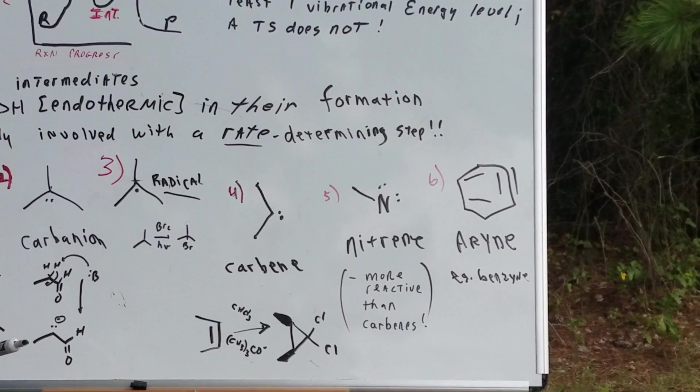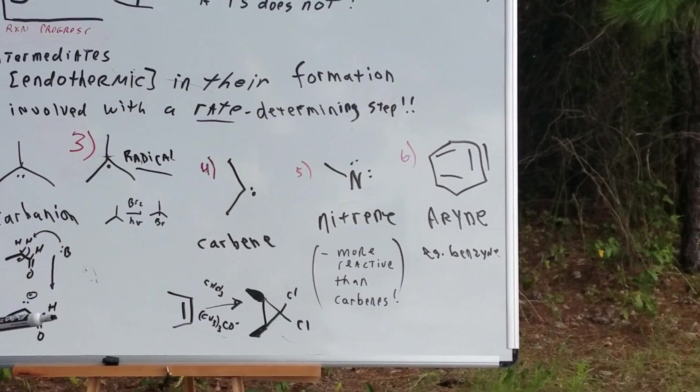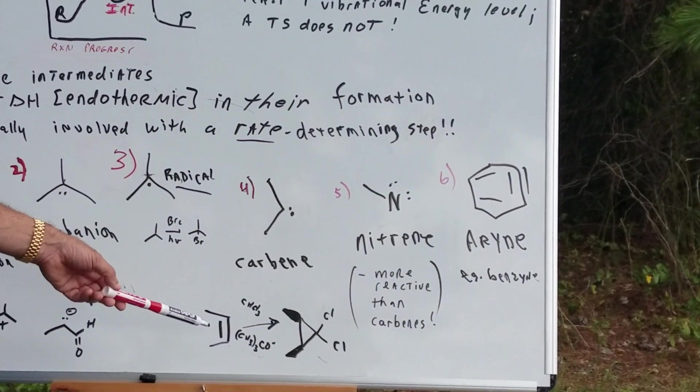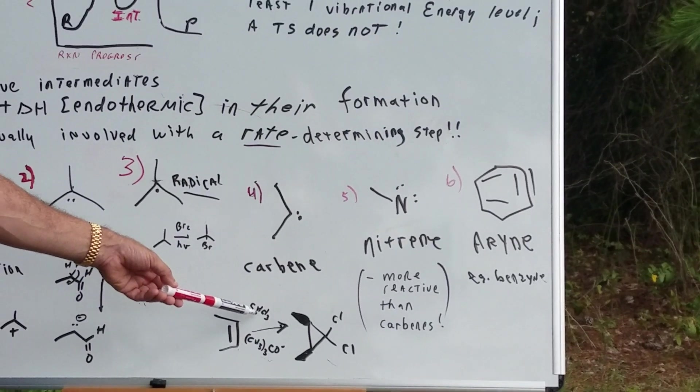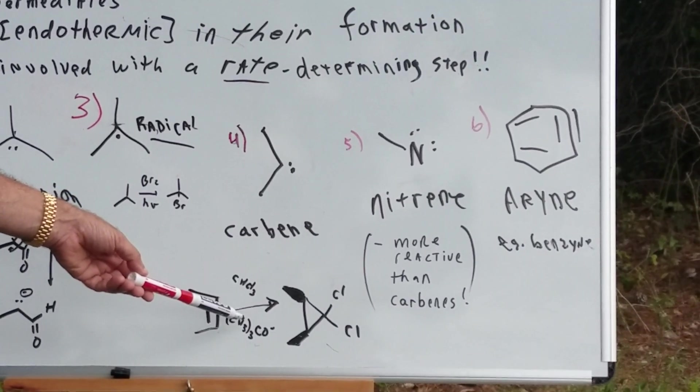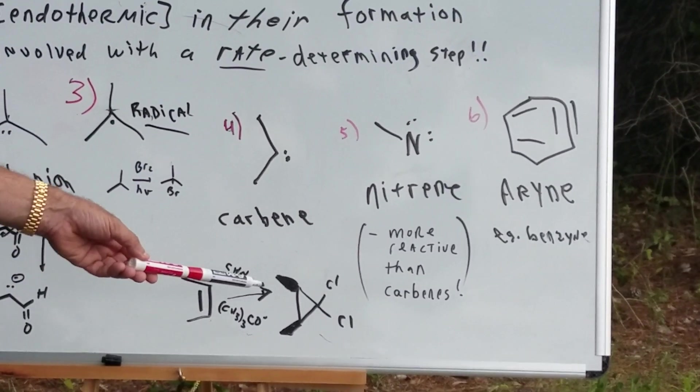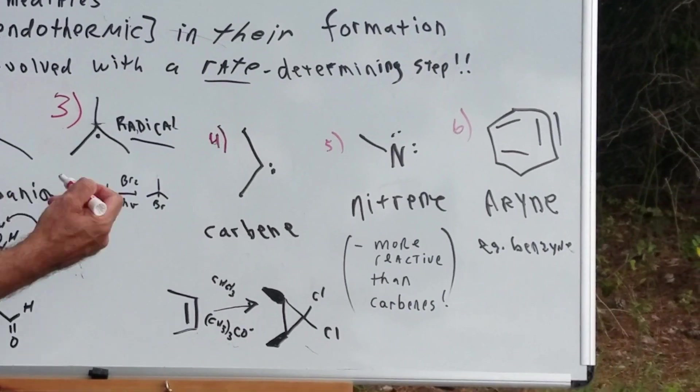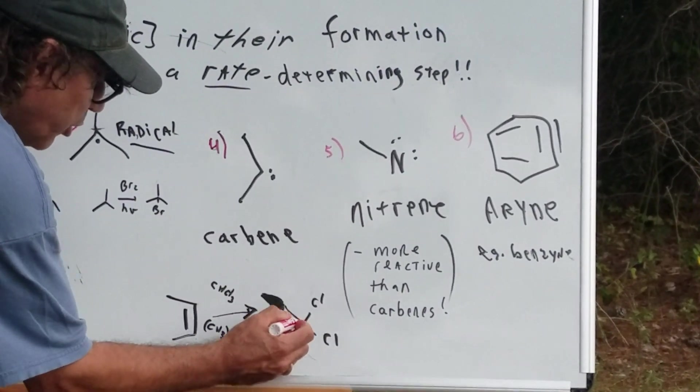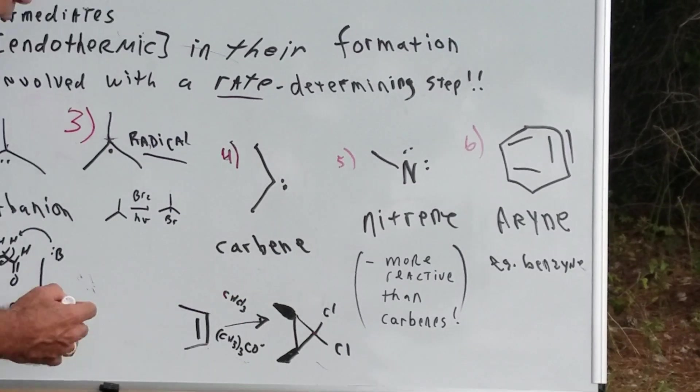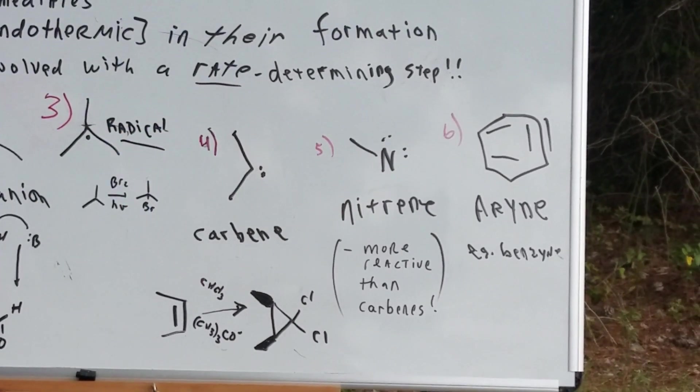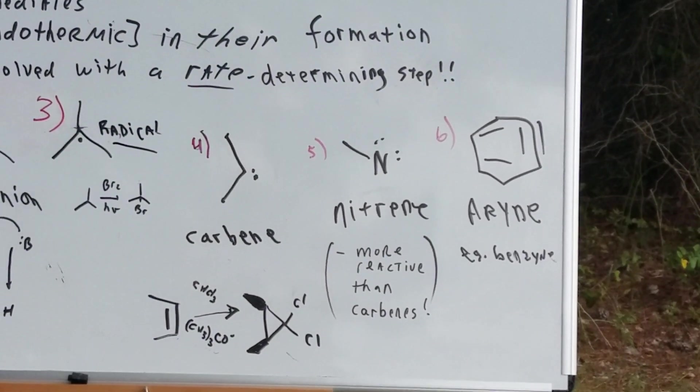Number four you might not be so familiar with. That's a carbene. A good example would be if you took chloroform and you took a very strong base, you would insert this carbon right here, which came from here. And that would involve something called a carbene. And that's a neutral species.